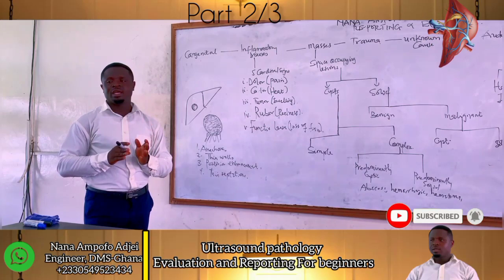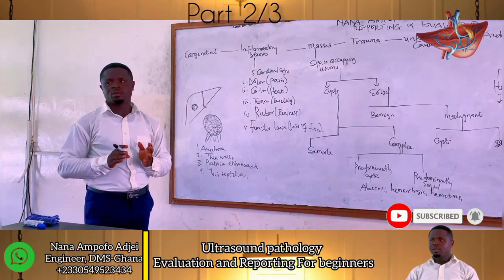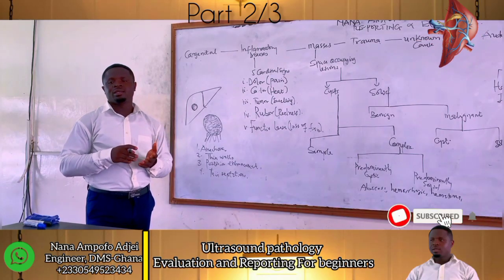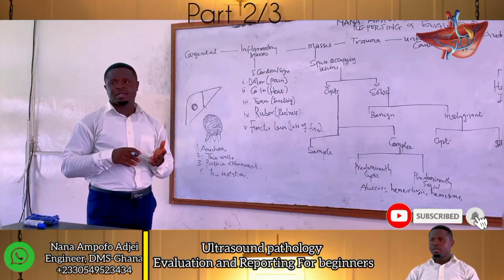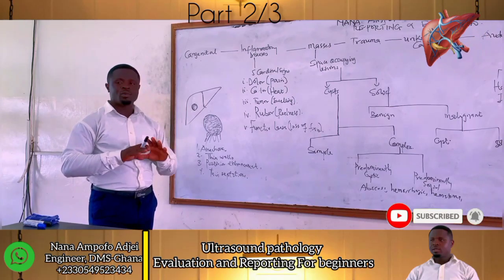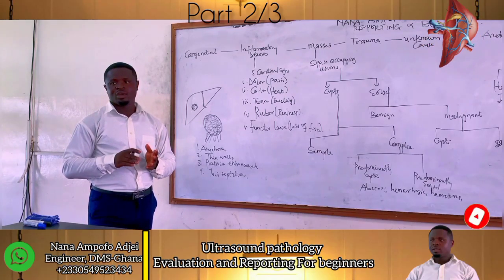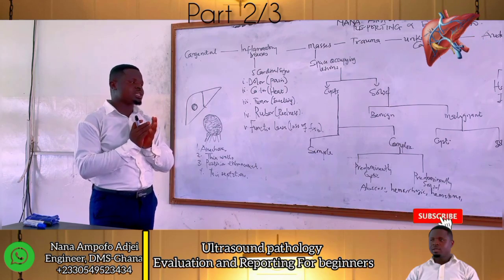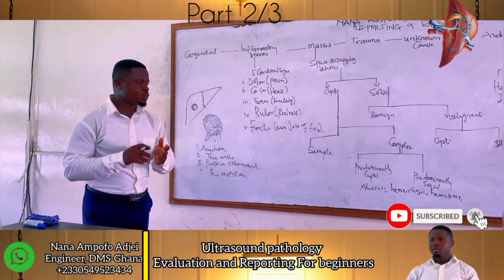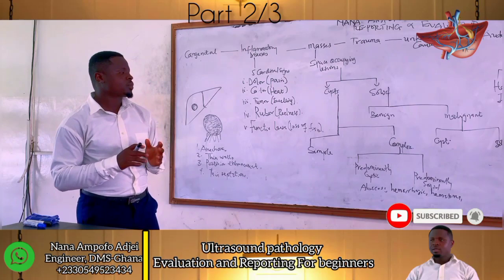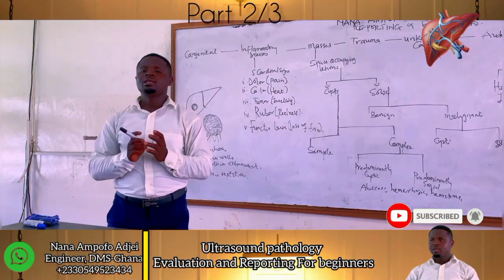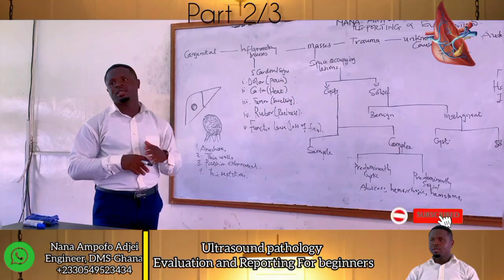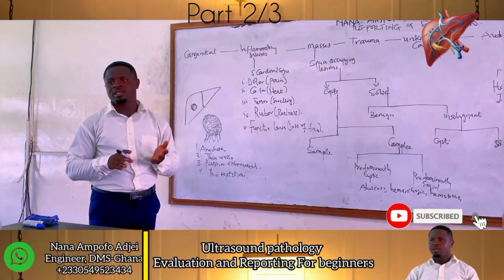Now, within the uterus, within the cervix, we have glands that line the cervical canal. So we have Nabothian glands. When there is obstruction of these glands, cysts may form within the cervix. And then any cyst that forms within the cervix is called Nabothian cysts.